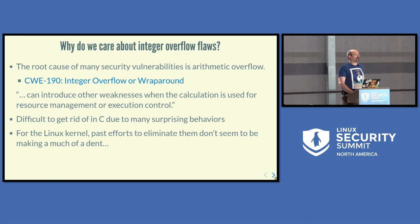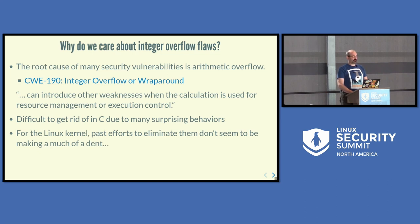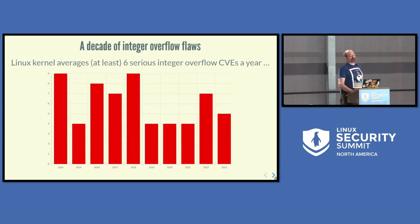The main question is: why do we care about integer overflows at all? Honestly, it's the root cause of a lot of security vulnerabilities. We have mitigations in place to catch the effects of overflows — like control flow integrity, which is sort of an after-the-flaw fix — whereas addressing integer overflow goes after the root cause. This is really difficult to get rid of in C because of a lot of surprising behaviors that exist. Other languages have dealt with this head-on; Rust has explicit wrapping types, for instance. But the main takeaway is that in the Linux kernel, everything we've been doing doesn't seem to be making much of a dent.